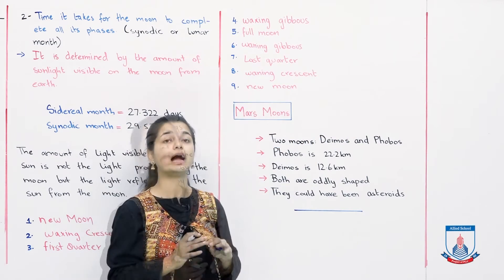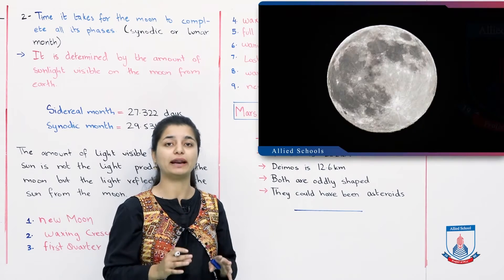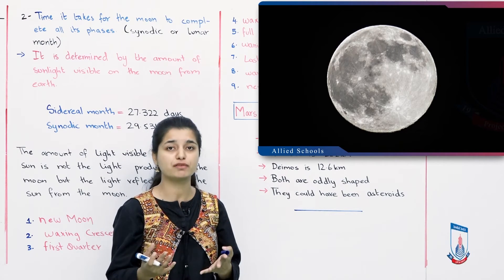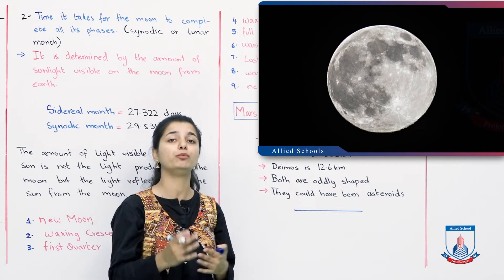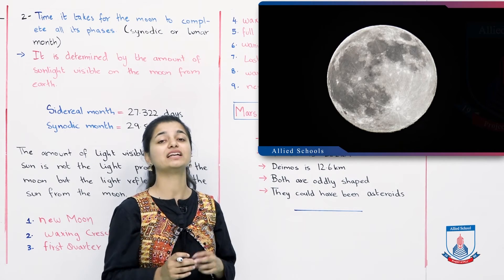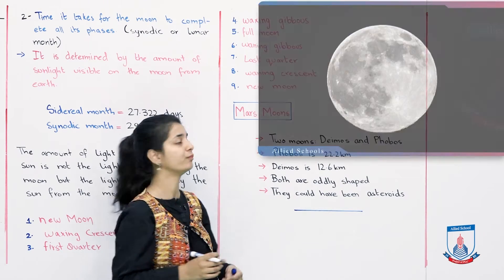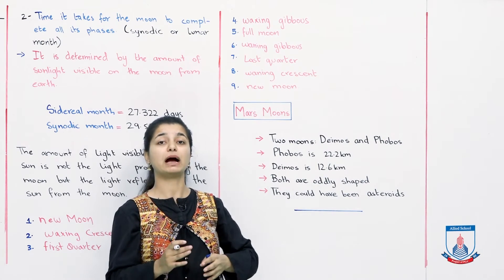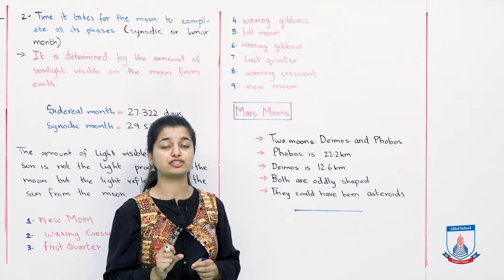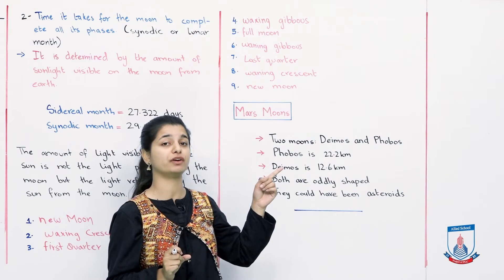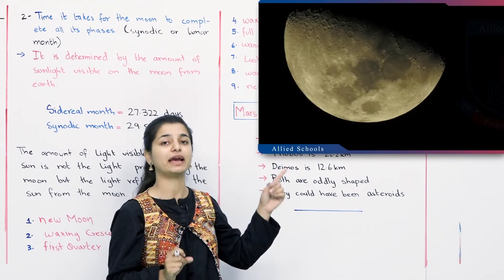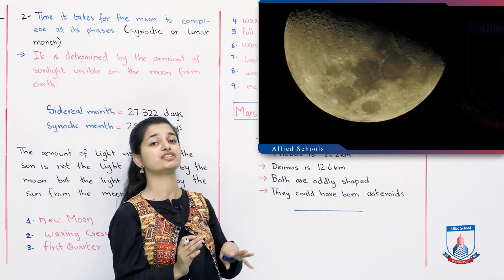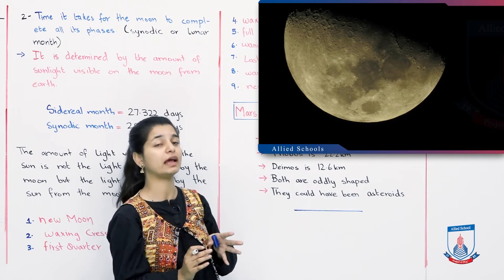Aage hai full moon — ab ho gaya hai poora ka poora moon bilkul bright. Ab upar picture mein bhi dekh sakte ho, now the moon is fully bright, it's reflecting all the light from the sun, aur poora moon lit ho gaya hai, and that is why we call this a full moon. Next phase is waning gibbous. Ab waning gibbous mein, aap dekhao, right wala crescent jo hai aapka extreme pe woh dark ho gaya — please refer to the picture above. So aapka right side pe ek crescent jo hai woh dark shape, baaki sari left side jo hai sari ki sari sunlight ko reflect kar rahi hai.